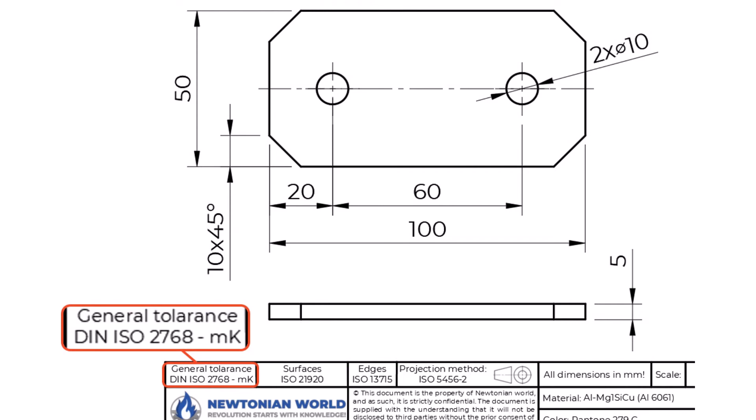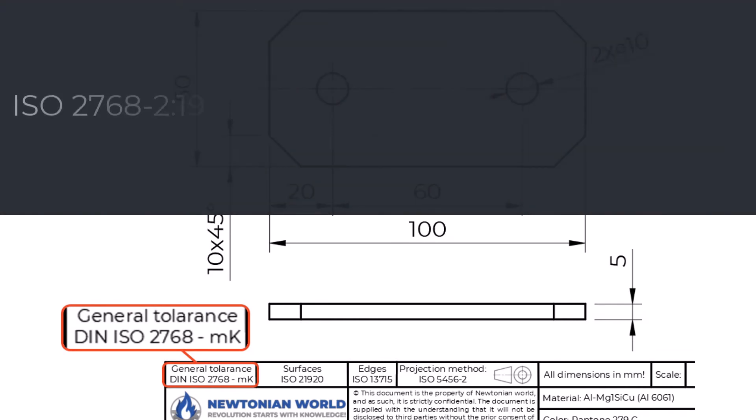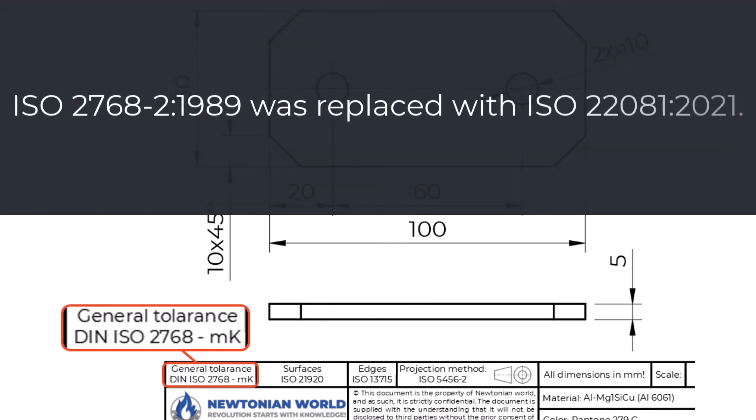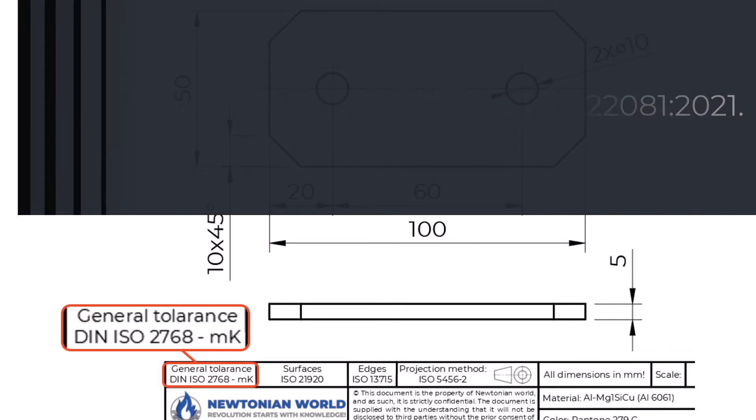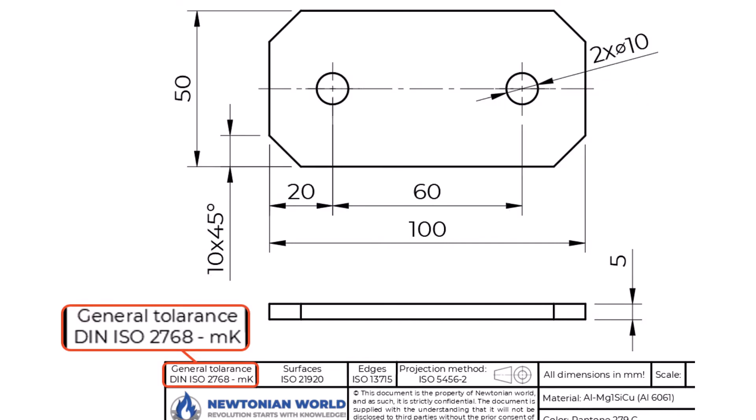As stated above, ISO 2768-2:1989 was withdrawn and replaced with ISO 22081-2021. We have a small plate with two holes and a chamfer on every edge. As you can see, we did not define any tolerances on dimensions, but that does not mean that we don't have defined tolerances on the drawing. In our title block we are referring to the ISO 2768-MK standard for general tolerances.